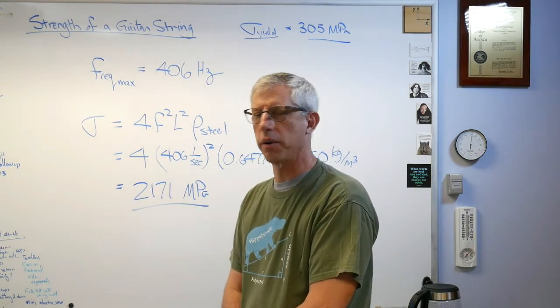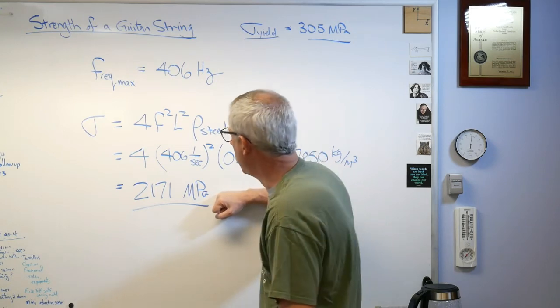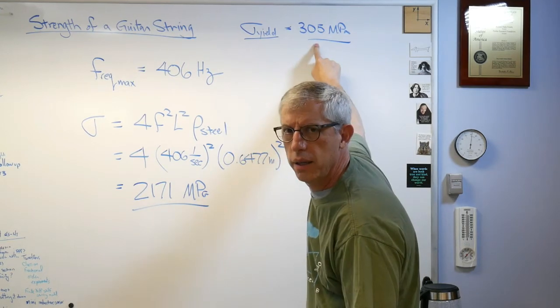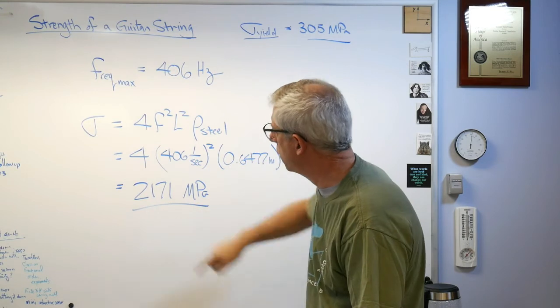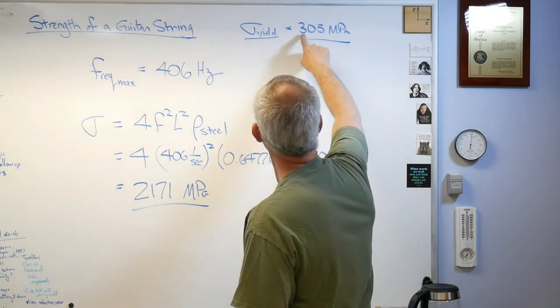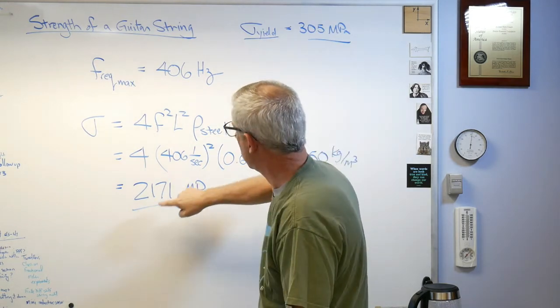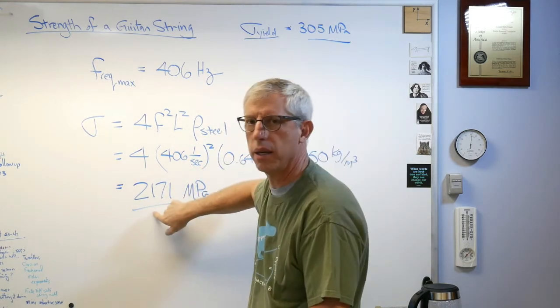Love that whiteboard fairy. So anyway, 2,171 megapascals. Now wait a minute, 305 versus 2,171? If I multiply that by about 7, that's that number.